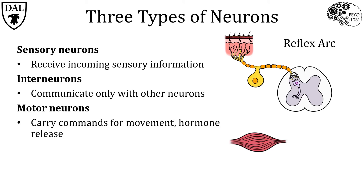Coming back to our example: motor neurons are the final link in this reflex arc. They receive inputs from upstream interneurons and send signals to peripheral muscles. Thus, the effective communications between sensory neurons, interneurons, and motor neurons completes the reflex arc.